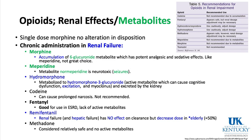Renal effects and metabolites of opioids: a single dose of morphine in renal failure poses little concern, but repetitive doses risk buildup of the 6-glucuronide metabolite, which has potent analgesic and sedative effects normally cleared by the kidney. With meperidine, repetitive doses in renal failure build up normeperidine, which is neurotoxic and can cause seizures. Hydromorphone (Dilaudid) is metabolized to a 3-glucuronide metabolite that is active and can cause cognitive dysfunction, excitation, even myoclonus — accumulating in renal failure.